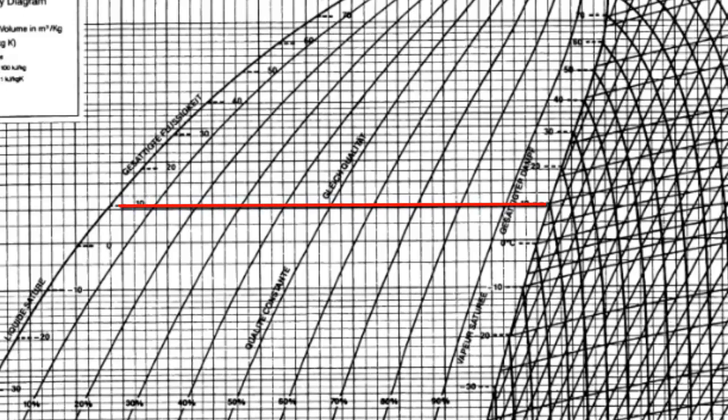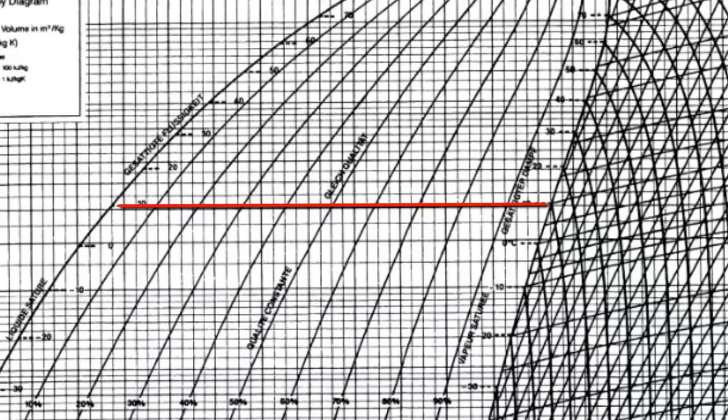So, we will use the low pressure or the evaporator temperature to draw a horizontal line. As we see on this chart, the evaporator temperature was given as 10 degrees C. And therefore, we have drawn a horizontal line that connects the 10 degrees C, both on the left-hand side and the right-hand side under this bell-shaped curve. And we have the lower part of the cycle.